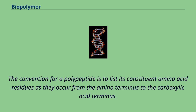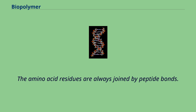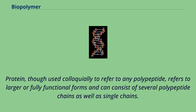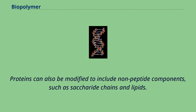The convention for a polypeptide is to list its constituent amino acid residues as they occur from the amino terminus to the carboxylic acid terminus. The amino acid residues are always joined by peptide bonds. Protein, though used colloquially to refer to any polypeptide, refers to larger or fully functional forms and can consist of several polypeptide chains as well as single chains. Proteins can also be modified to include non-peptide components, such as saccharide chains and lipids.